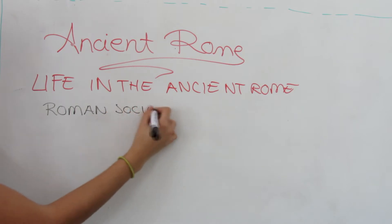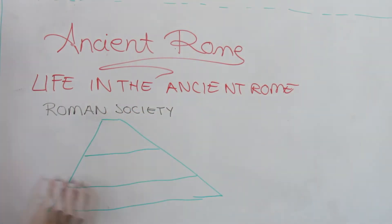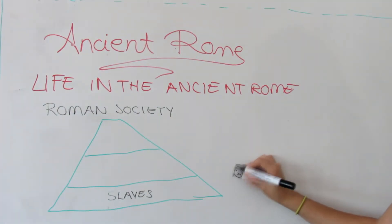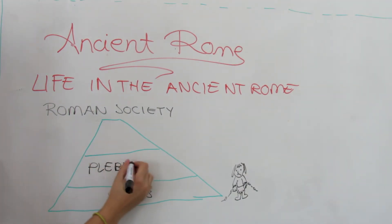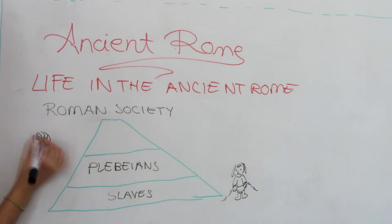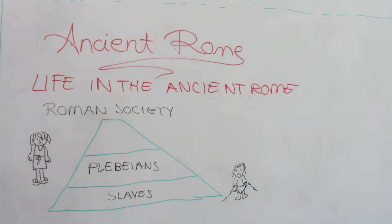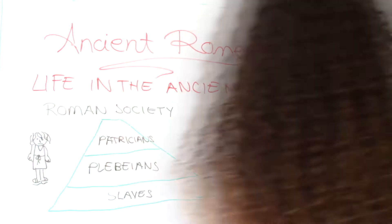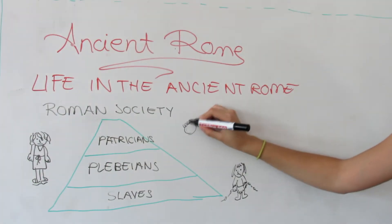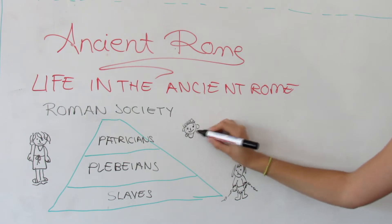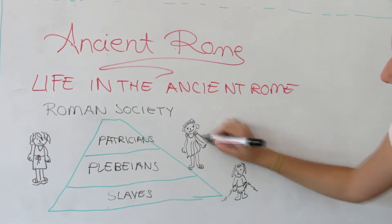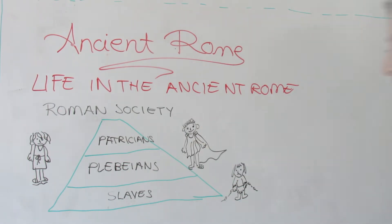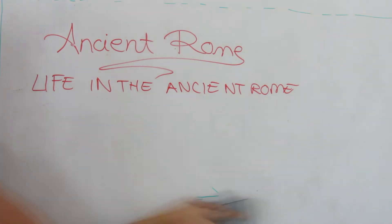Roman society was divided into slaves at the bottom, those belonging to their owner and had no rights. Above slaves were the plebeians, who were most of the population. At the top of society were the patricians; they had all their rights, and whose ancestors could be tracked back to the founding of the city.